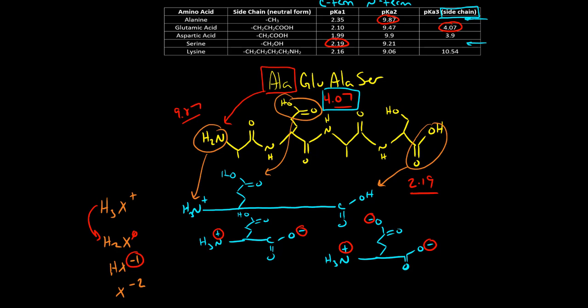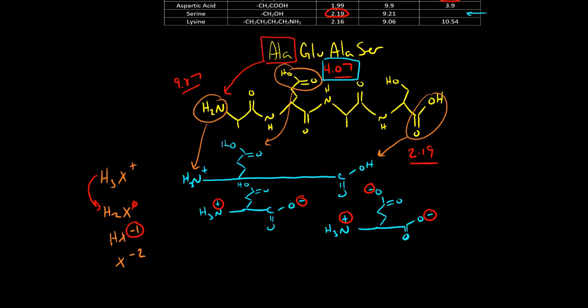And finally, to redraw this for the fully deprotonated, we now deprotonate the amine. So now we have a negative 1 charge on the C-terminus, a negative 1 charge on the side chain, and the N-terminus is neutral. So the charge of negative 2 is accurate.